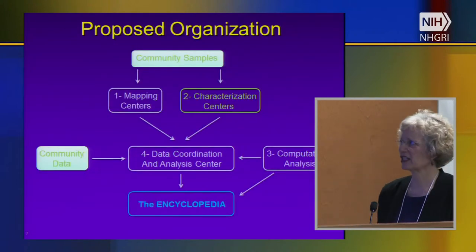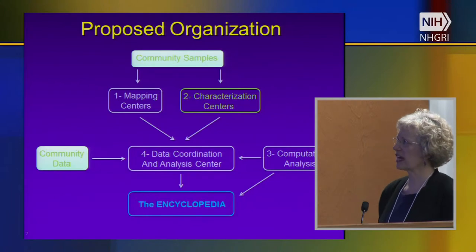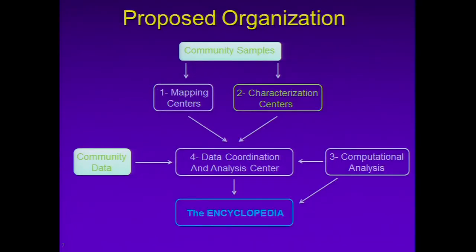This is the proposed organization of these initiatives, with the green components being the new activities. The data production activities will take place in the mapping centers and the characterization centers, in part using samples contributed by the community. The data will be submitted to the ENCODE Data Coordination and Analysis Center, where it will be processed, housed, displayed, and made available to the research community, and also analyzed to create the encyclopedia of functional or candidate functional elements. We'll also be receiving community data to the EDCAC that can contribute to the encyclopedia, and we want to support computational analysis to contribute to both analyses and directly to the encyclopedia.